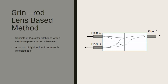The graded rod lens method contains two quarter-pitch lenses with a semi-transparent mirror in between them. Similar to the previous method, some portion of the light is transmitted through the mirror towards a specific port and some portion is reflected back towards another port. The power distribution among the output ports again depends on the characteristics of the coupler.